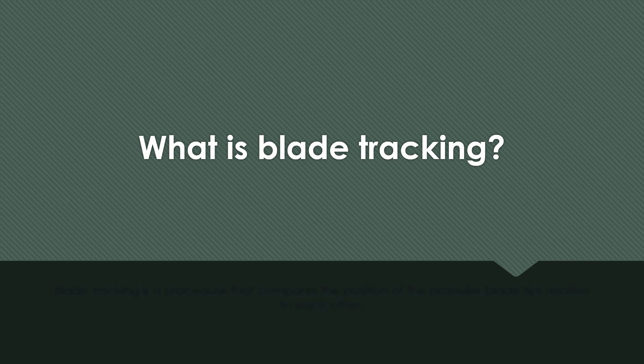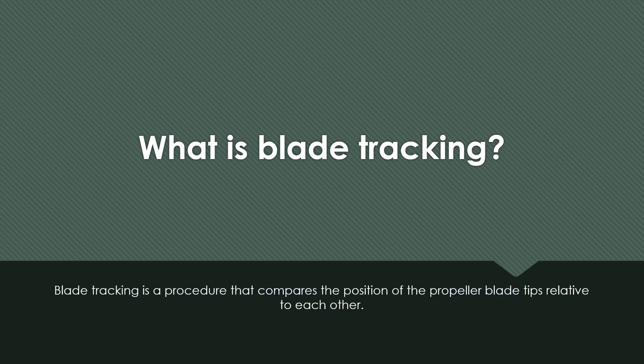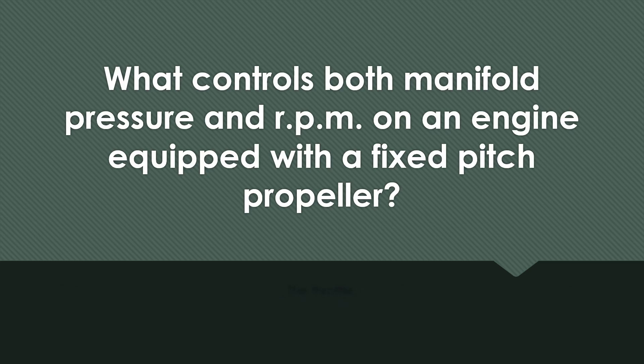What is blade tracking? Blade tracking is a procedure that compares the position of the propeller blade tips relative to each other. What controls both manifold pressure and RPM on an engine equipped with a fixed-pitch propeller? The throttle.